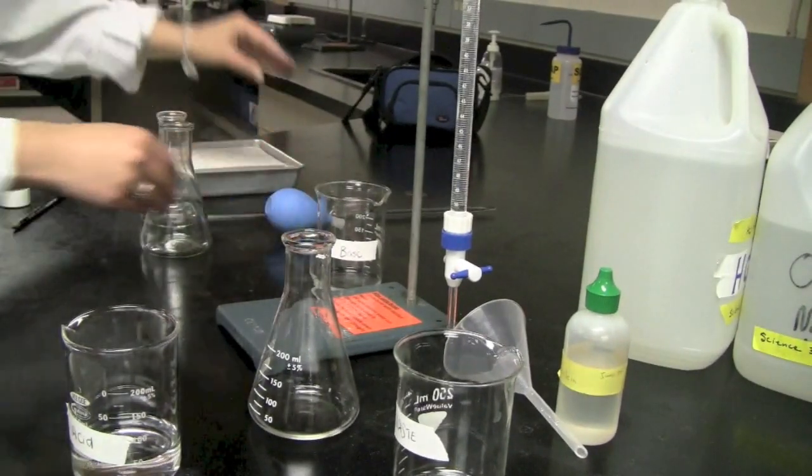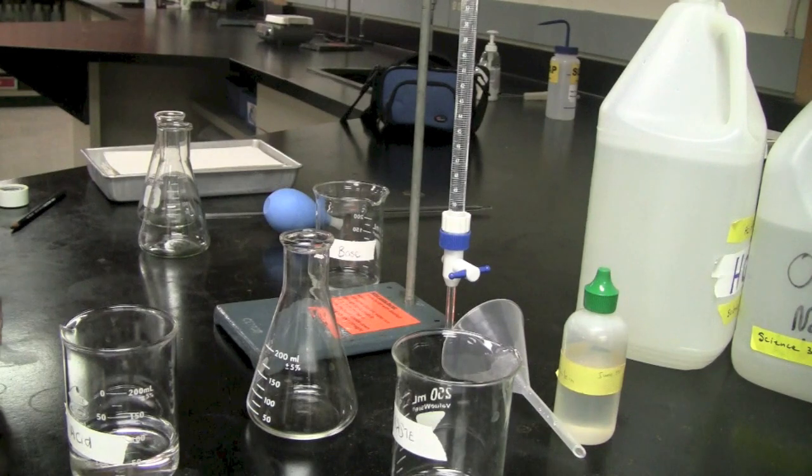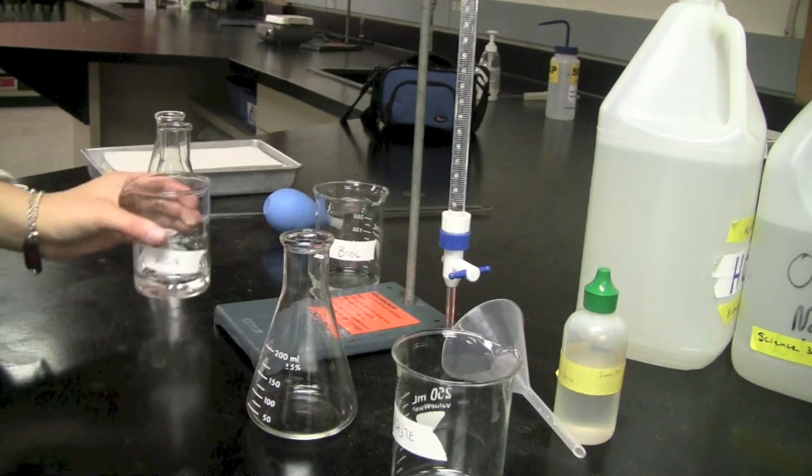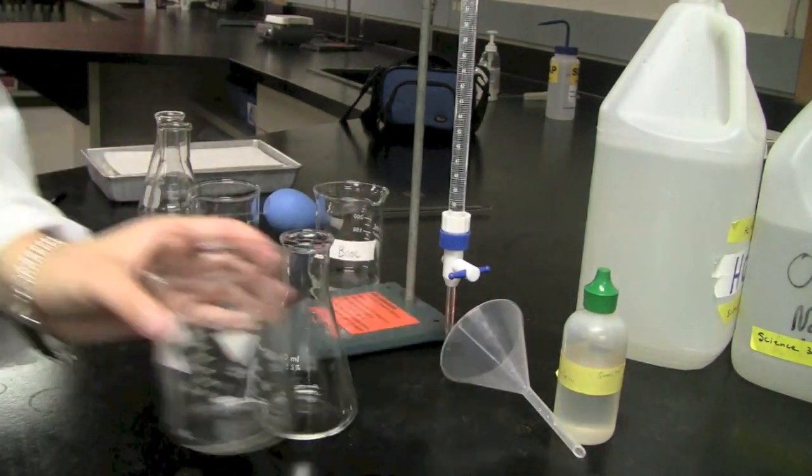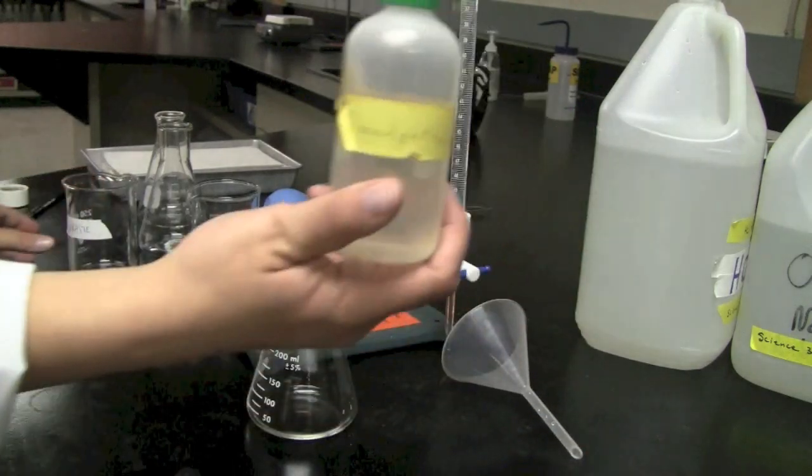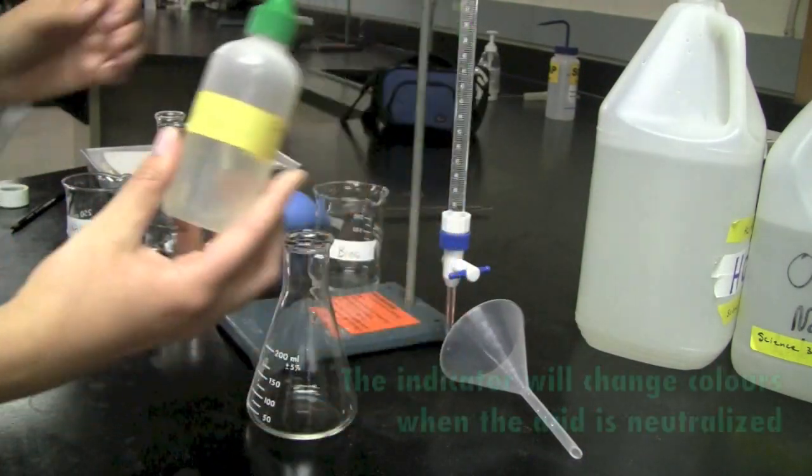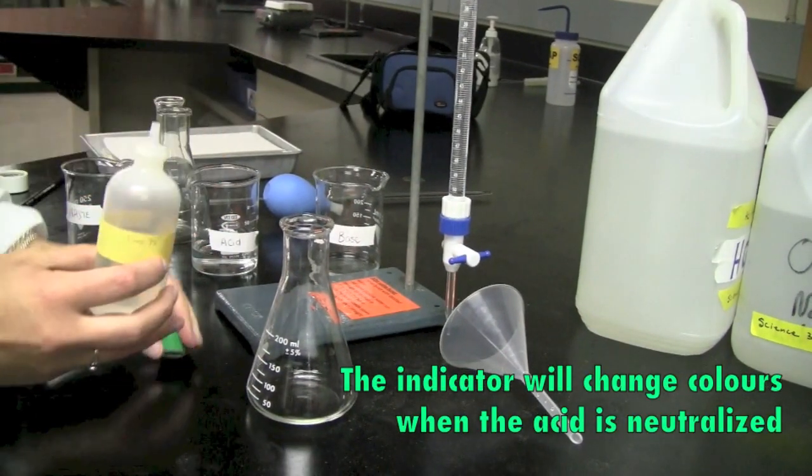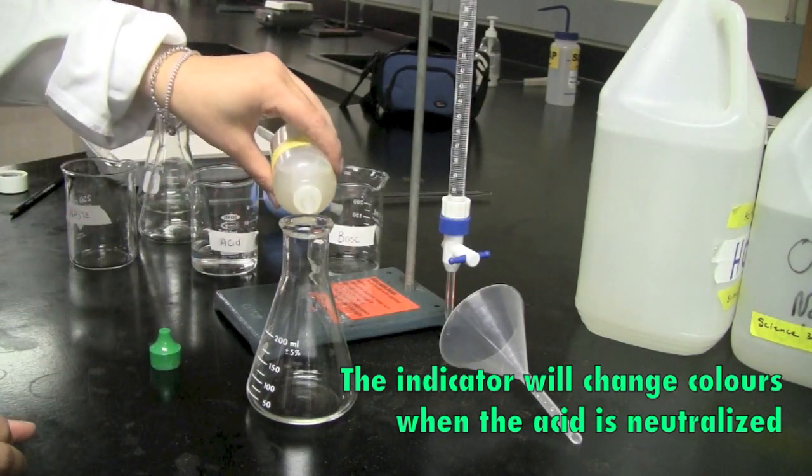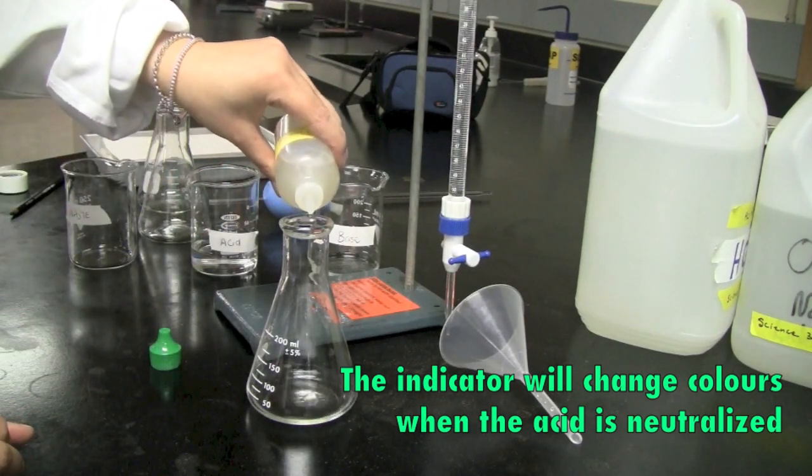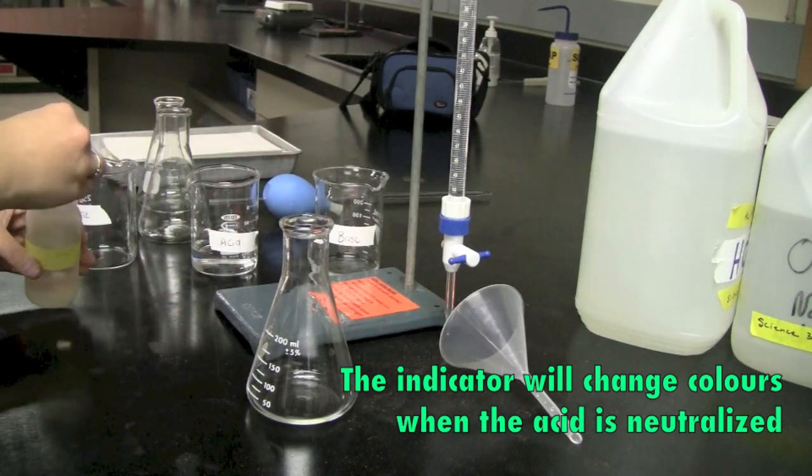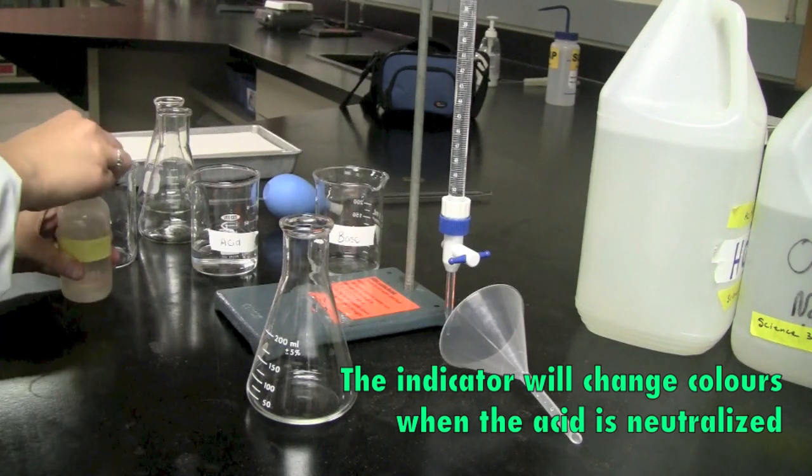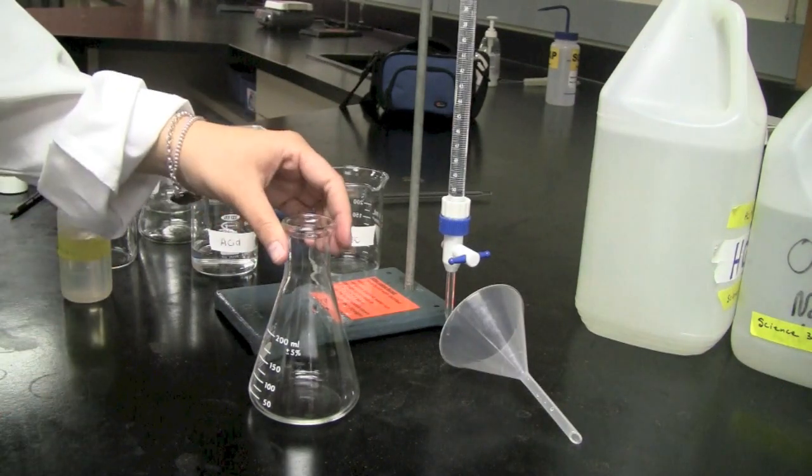So now that we've got the acid prepared, what we're going to do, we're going to take our phenolphthalein and we're going to add two or three drops into the Erlenmeyer flask. We're going to swirl it a little bit just to mix it up so that it's evenly distributed.